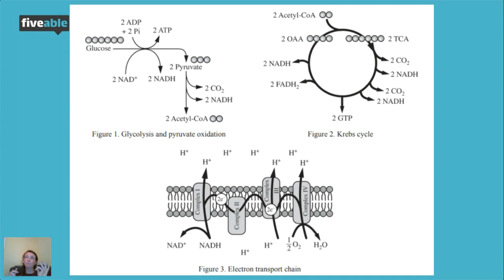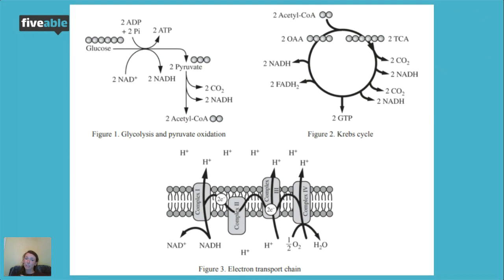Scientists have done experiments where they radioactively tag carbon in glucose — you eat it, and they can measure your exhalations and detect the radioactivity coming back out as CO2. All the carbon that goes in as glucose comes right back out as carbon dioxide when you exhale. The most important thing to remember about the Krebs cycle is that we form a lot of electron carriers, which gives us the bang for our buck in step three.